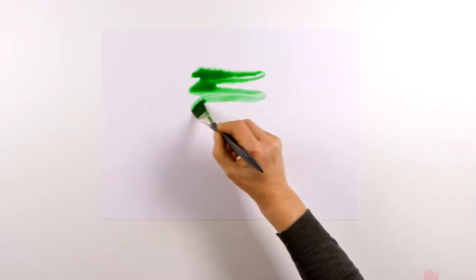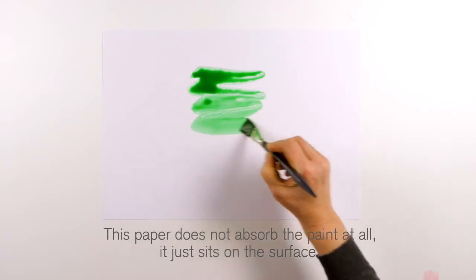This is Bristol board. This paper does not absorb the paint at all, it just sits on the surface.